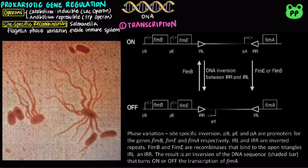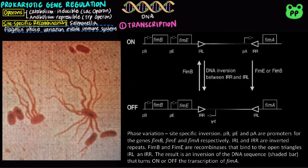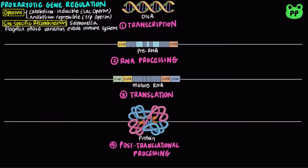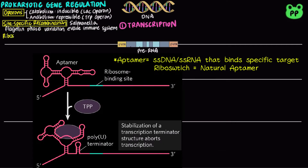This is achieved by periodic inversion through site-specific recombination. Bacterial transcription is also regulated by riboswitch RNA, which are structured domains found in untranslated regions at the 5' ends of certain bacterial mRNAs. It serves as a feedback inhibition mechanism: when the appropriate ligand binds, the riboswitch stabilizes the transcription terminator and aborts transcription.